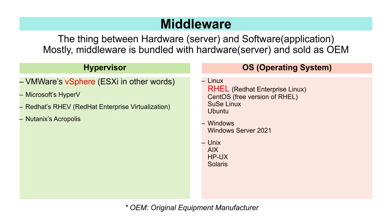OEM means that the server company sells not only the server but also middleware and provides technical support. A common hypervisor for virtualization is VMware's vSphere, or ESXi. OSes include Linux, Unix, and Windows, and the most common OS for enterprise use is Red Hat Linux.